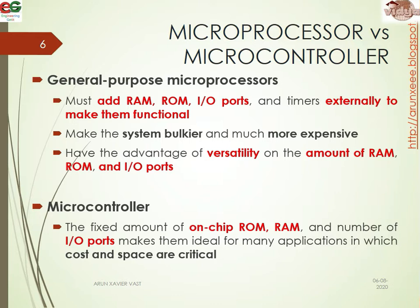If you consider the microcontroller, the fixed amount of on-chip RAM and ROM and the number of outputs makes them ideal for many applications in which cost and space are critical. One of the main problems of the microcontroller is that we cannot include more RAM and ROM into the single chip. So in applications where we need very less space, we can use the microcontroller, since it incorporates all RAM, ROM, and I/O ports in a single chip saving a large amount of space. But with microprocessors, we can add 16 GB or 32 GB of RAM according to our need, though the size will be very large.